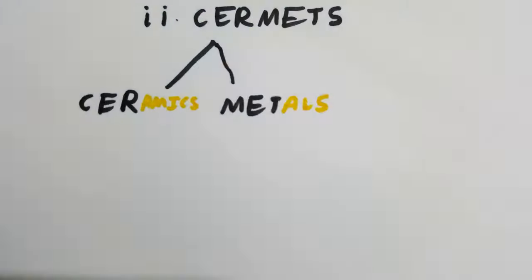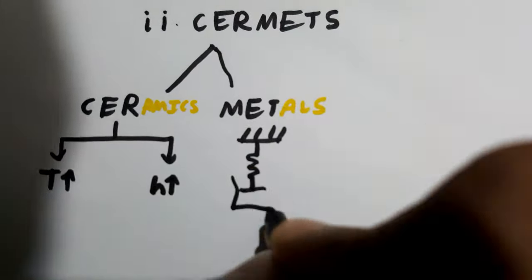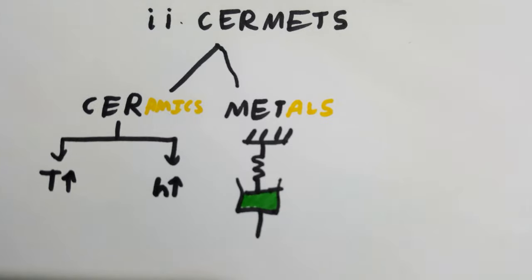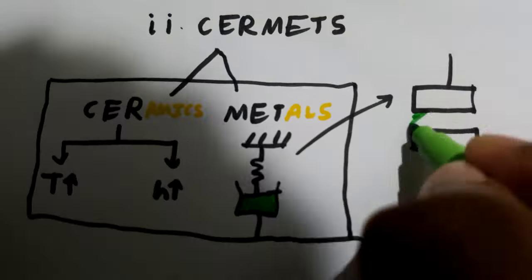Second, cermets. Cermet is a combination of two words: cer from ceramics and met from metals. Ceramics have high temperature strength and hardness, whereas metal powders have good shock-resisting ability. Hence, cermets have both these properties and are combined using approximately 20-40% ratio of metallic binders.